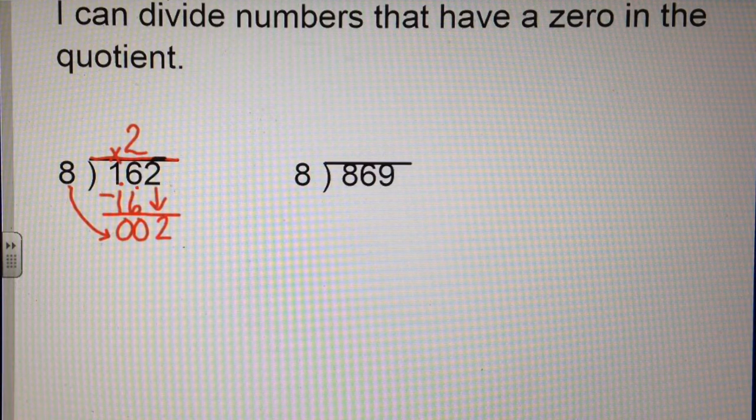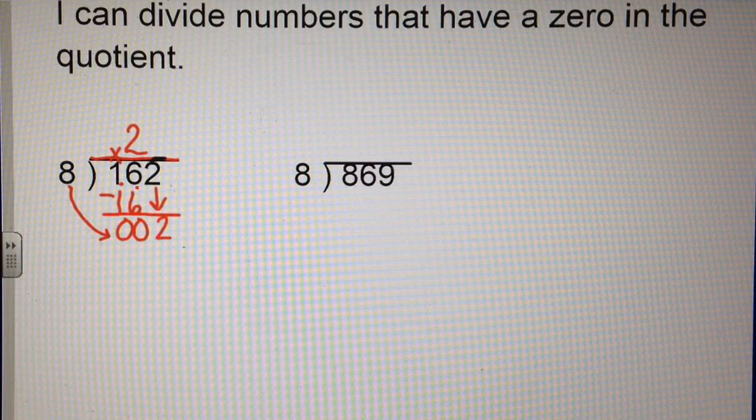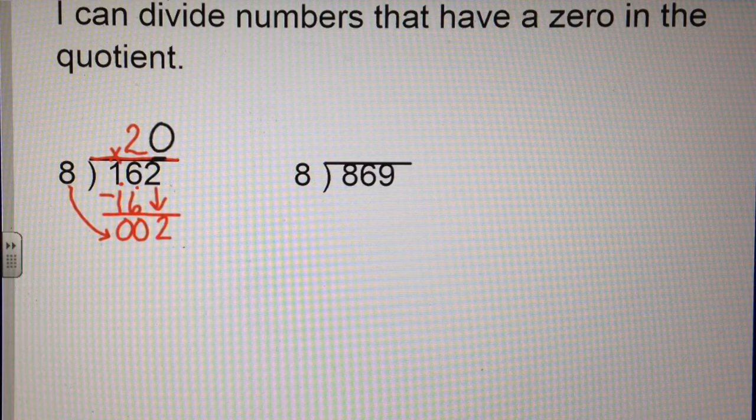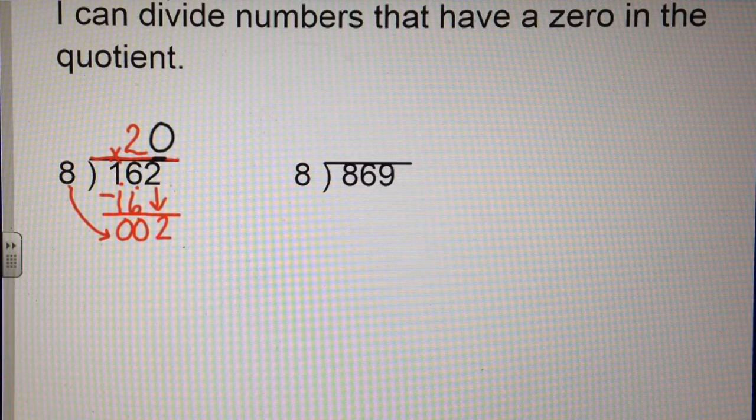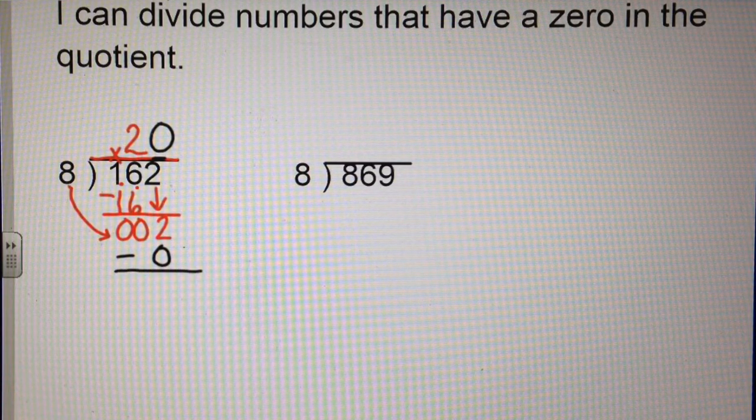I am not going to put a remainder because 8 goes into 2 zero times. 0 times 8 is 0. And then I subtract.